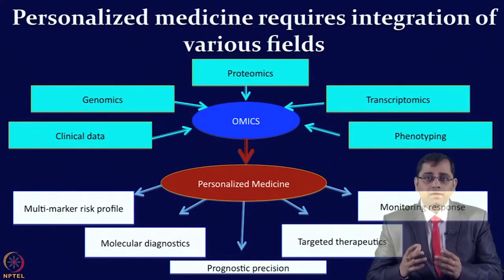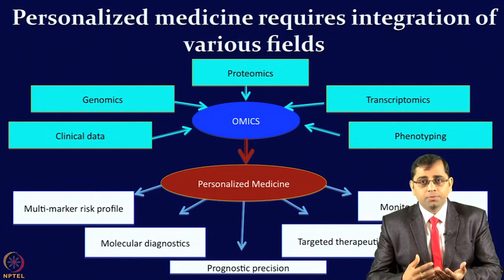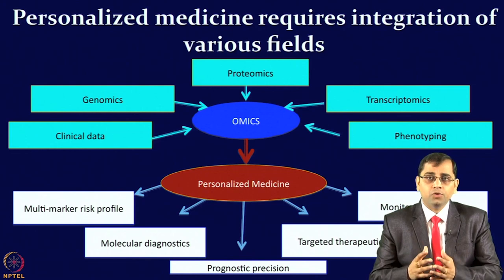When it comes to the medical field, we cannot simply rely on one set of technologies looking at only a single type of biomolecule, because human physiology — or any organism's physiology — depends on the intricate relationship of various biomolecules. If we are looking at complex physiological systems, we have to look at all the possibilities of different types of biomolecules. For example, if we are trying to capture the actual physiological consequence, then we should look at the genome, the transcriptome, the proteome, as well as the clinical information and phenotyping of these individuals. All of this comes under the field of omics.